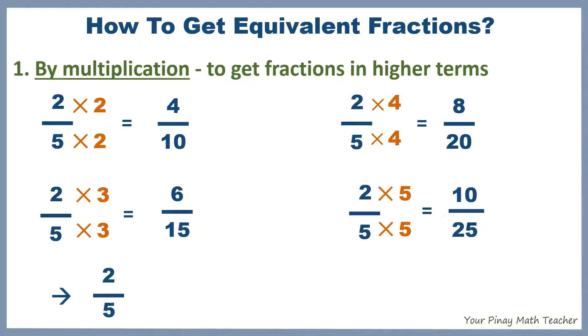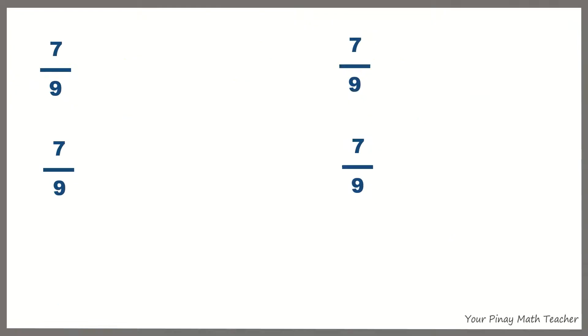So, 2 fifths is equal to 4 tenths, 6 fifteens, 8 over 20, 10 over 25, and so on. This means that you can have endless equivalent fractions of 2 fifths in higher terms.